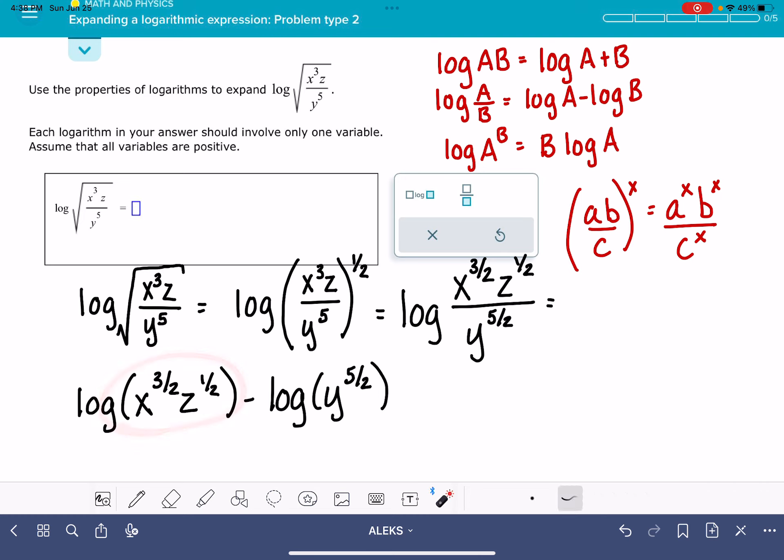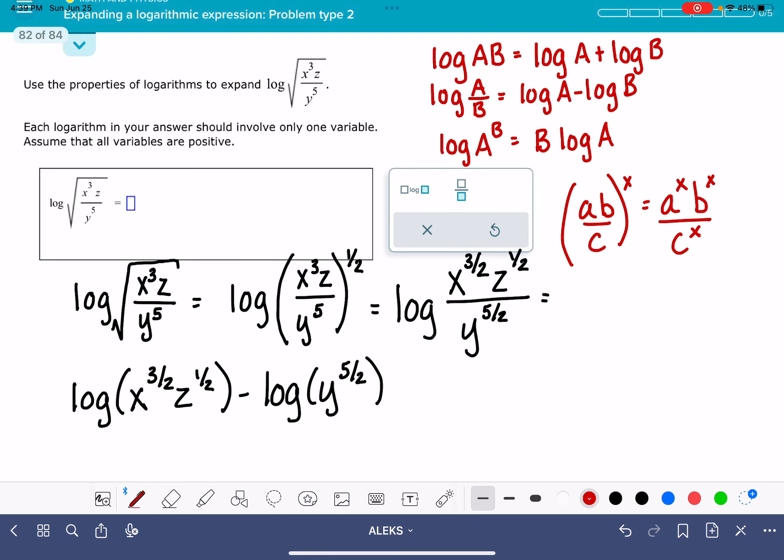Now the next thing that I'm going to do is work on this. ALEKS says every logarithm in your answer should involve only one variable. This is what that means. This log involves only one variable, the variable Y. This log has two variables, X and Z. So I need to simplify this one even more. To do that, I'm going to use this property. The log of A times B is equal to the log of A plus the log of B. Down here, I'm going to write this as the log of X to the three halves plus the log of Z to the one half minus the log of Y to the five halves.